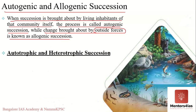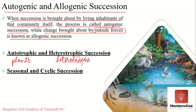Autotrophic and heterotrophic succession are distinguished based on who is causing the succession. Succession in which green plants are initially much greater in quantity is known as autotrophic succession, while succession in which heterotrophs are greater in quantity is known as heterotrophic succession. Simply put, if autotrophs are larger in number it is autotrophic succession; if heterotrophs such as animals are larger in number, it is heterotrophic succession.